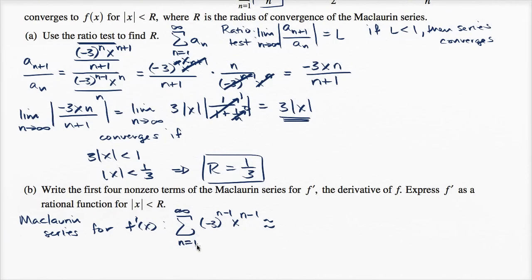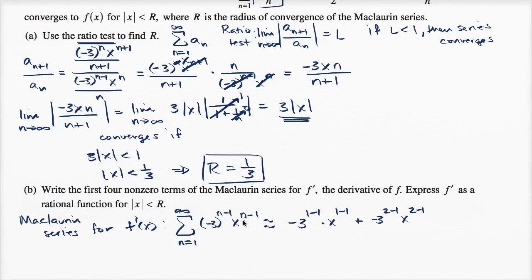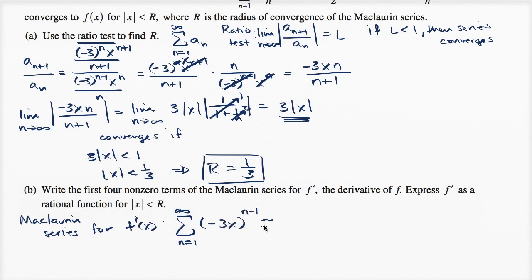So if we want the first four non-zero terms: when n equals one, this is going to be negative three to the one minus one power times x to the one minus one. I could write this as negative three x to the n minus one. When n equals one, the exponent is zero, so negative three x to the zeroth power is just going to be one. When n equals two, the exponent is two minus one, so it's negative three x to the first power, which is just negative three x.